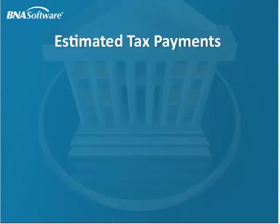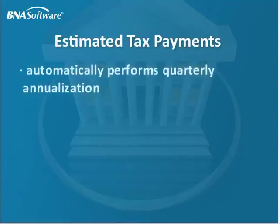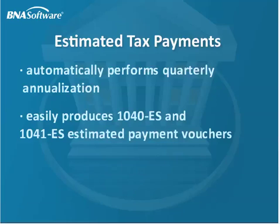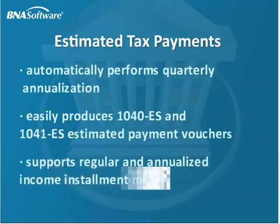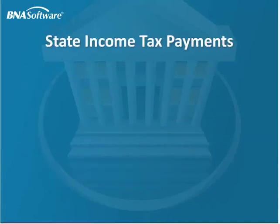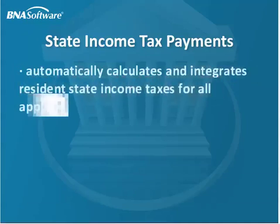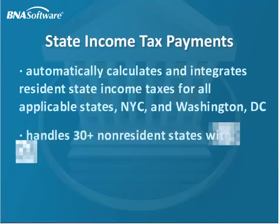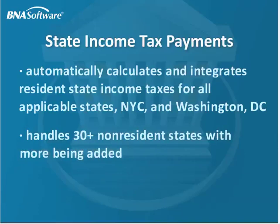The B&A Income Tax Planner automatically performs quarterly annualization for purposes of required estimated tax payments. You'll find it easy to produce 1040ES and 1041ES estimated payment vouchers, and the planner also supports both regular and annualized income installment methods. As for state income taxes, the Income Tax Planner automatically calculates and integrates these taxes for residents of all applicable states, as well as New York City and Washington D.C., and non-resident taxes for California, Connecticut, New Jersey, New York, and many other states. You'll have access to special worksheets for state tax payment entries and calculation of state refundable credits, federal deductions, and refunds.